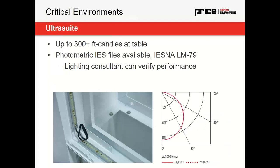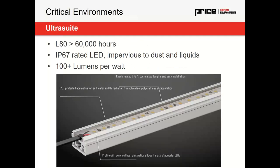The UltraSuite systems are designed to meet 300 foot candles at the operating room table. We provide photometric IES files that can be plugged into lighting software to give light levels within the space, and we also have a full design team available. The lighting is very high quality — rated for L80 over 60,000 hours, meaning it'll maintain greater than 80% of its original brightness for over 60,000 hours of operation. It's also IP67 rated, making it impervious to both dust and liquids, which is very beneficial when talking about cleaning. We don't have to worry about cleaning solutions getting inside and damaging the lighting.